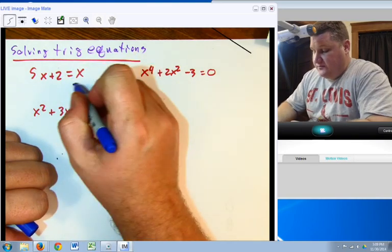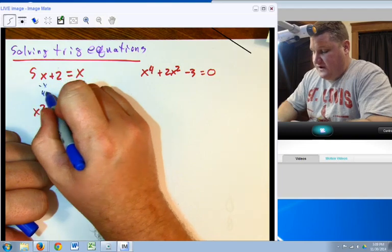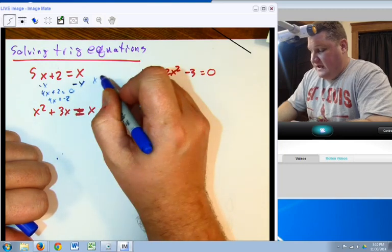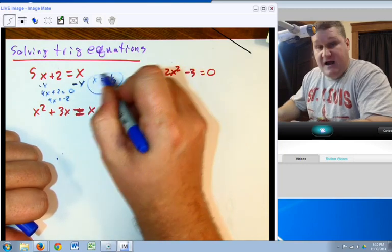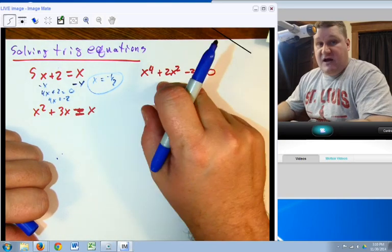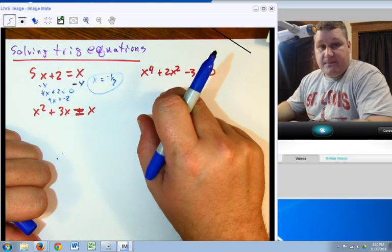You can simply subtract x from both sides. 4x plus 2 equals 0. 4x equals negative 2. x equals negative 1 half. No big deal. Over here, obviously, you're going to have to do what?